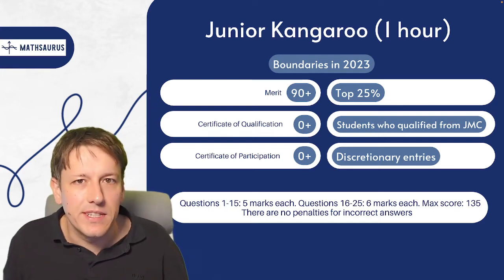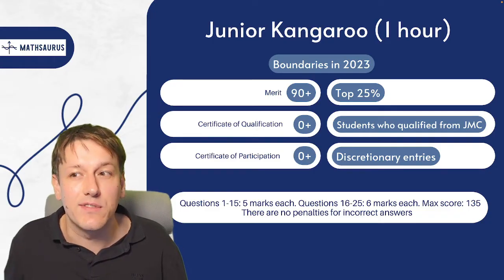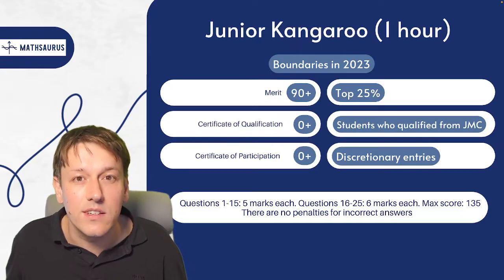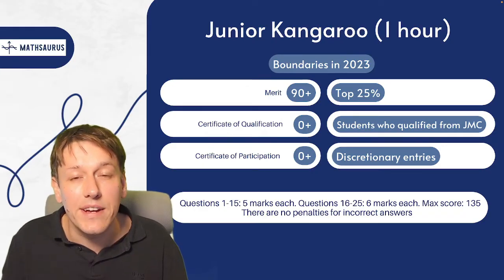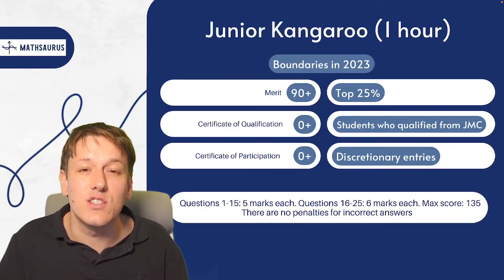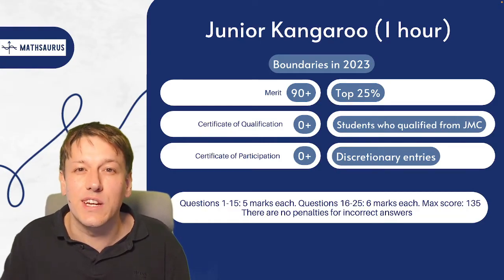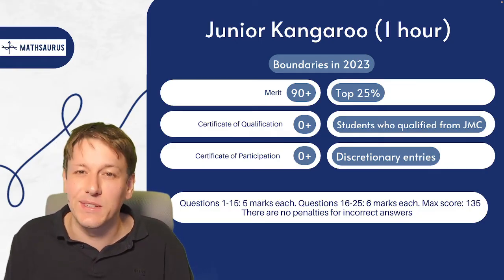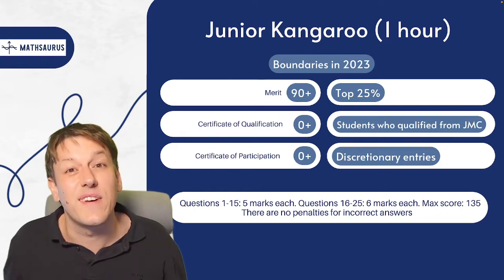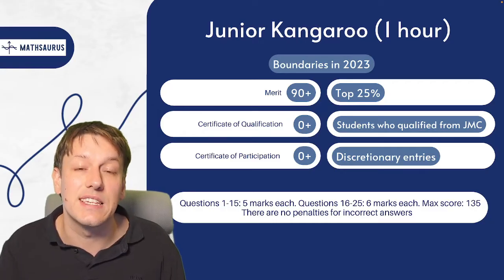The Junior Kangaroo is in the same format as the Junior Maths Challenge: questions 1 to 15 worth 5 marks each, questions 16 to 25 worth 6 marks each, with no penalties for incorrect answers. You get a certificate of participation if you entered via discretionary entry, a certificate of qualification if you qualified via the Junior Maths Challenge, or a merit if you score above 90 — which was last year's boundary — placing you in the top 25% of students in the Kangaroo. Of course, students in this competition are already among the very top students, so it does get quite hard to earn a merit.